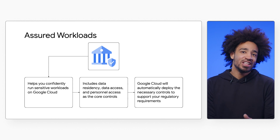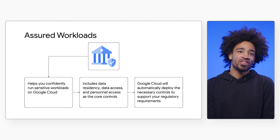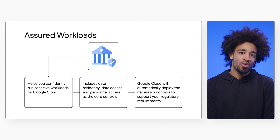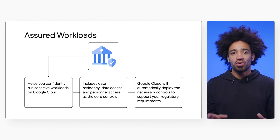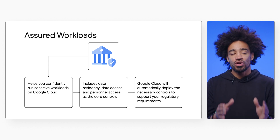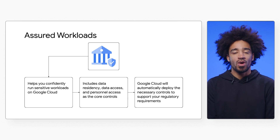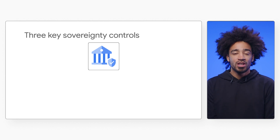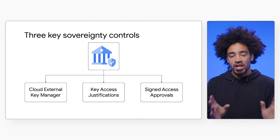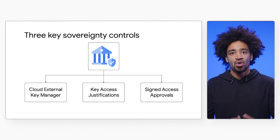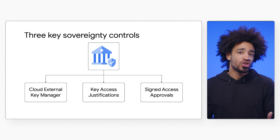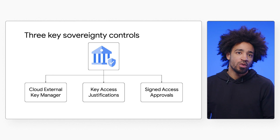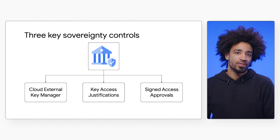All organizations need to do is select the regulatory framework they need to comply with, and Google Cloud will automatically deploy the necessary controls to support your regulatory requirements. To provide the highest level of protection, transparency, and control to our customers, we expanded Assured Workloads to offer what we call sovereignty controls.